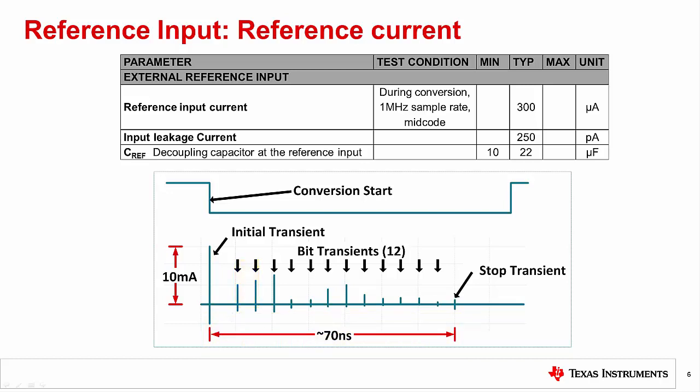Normally, a large filtering capacitor is placed at the reference input to respond to the rapid transient current requirements, and the reference will provide the average current needed to replenish the capacitor between the sharp transients. Sometimes, a wide bandwidth buffer is required at the reference input to the ADC because of the relatively short time between the transients. Notice that the specification table also gives a recommended decoupling capacitor for the reference input.